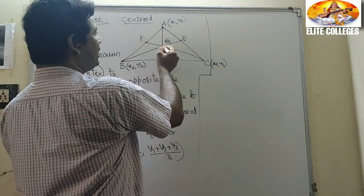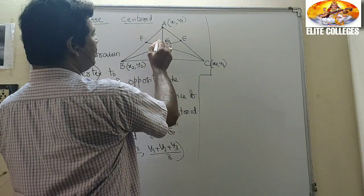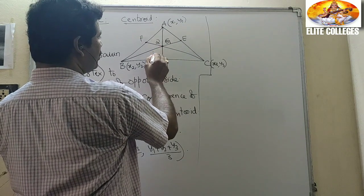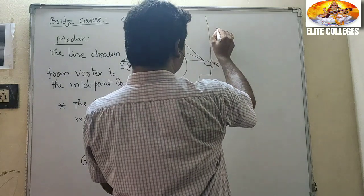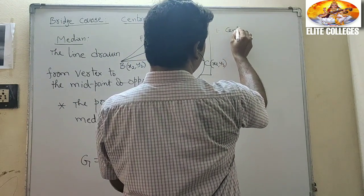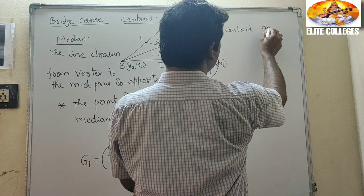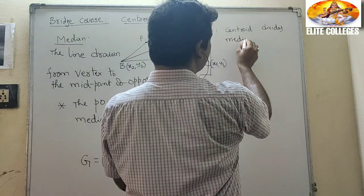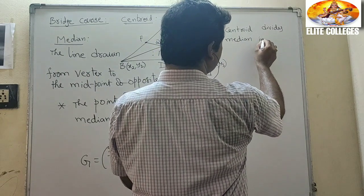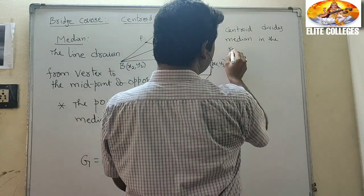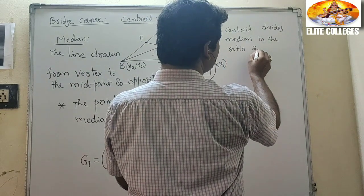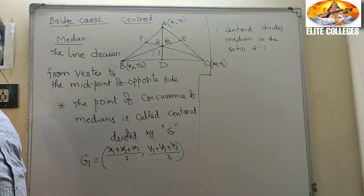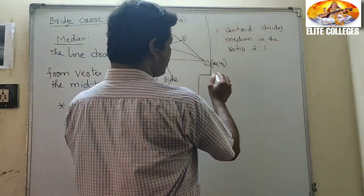The centroid divides the median AD in the ratio 2:1. That is the first property: the centroid divides the median in the ratio 2 is to 1.